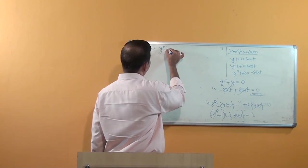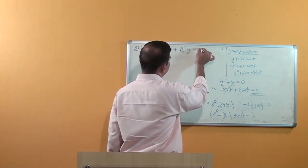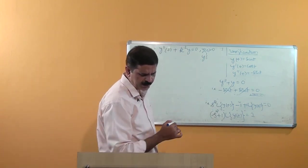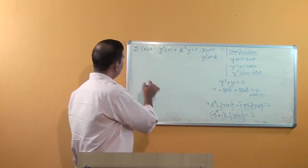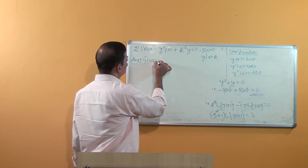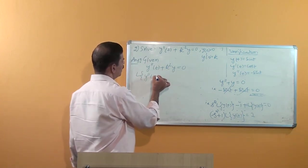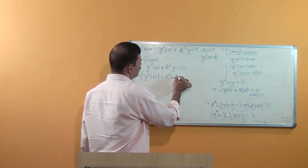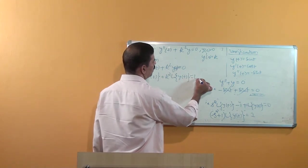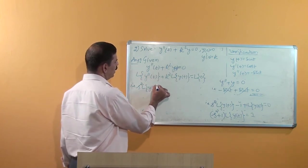The new problem: solve y'' + k²y = 0, with initial conditions y(0) = 0 and y'(0) = k. Taking Laplace transform on both sides, and using the standard formula, we get s² · L{y(t)} minus s · y(0) minus y'(0), plus k² · L{y(t)}, equal to 0.